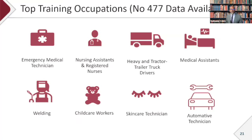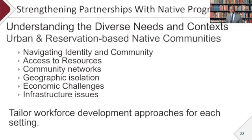Looking at where many participants have been steered or have shown interest — drawing on labor market information data — the primary fields are the medical field, nursing, truck driving, and medical assistance. That's what we've found and tracked, though it's not a restriction. For example, the Navajo Nation has its own utility company with an apprenticeship program covering financial areas, solar panels, and other fields. The items shown aren't a restriction — just the primary areas we observed.